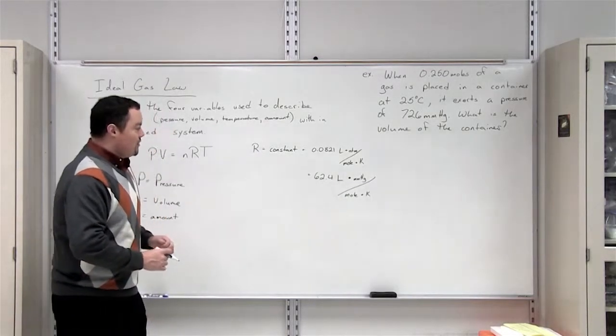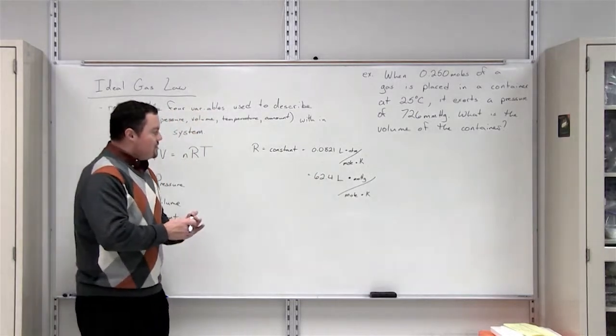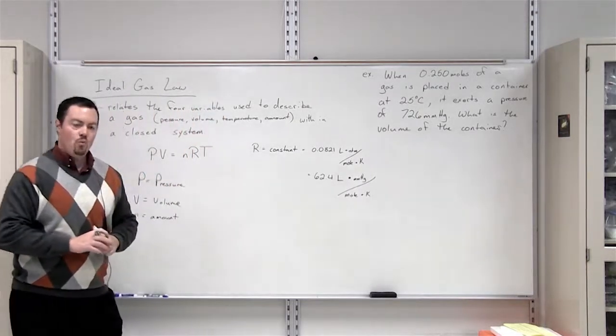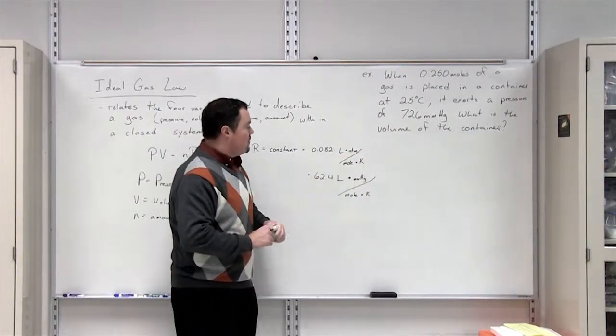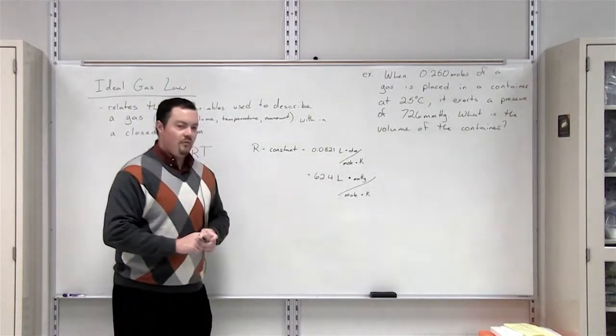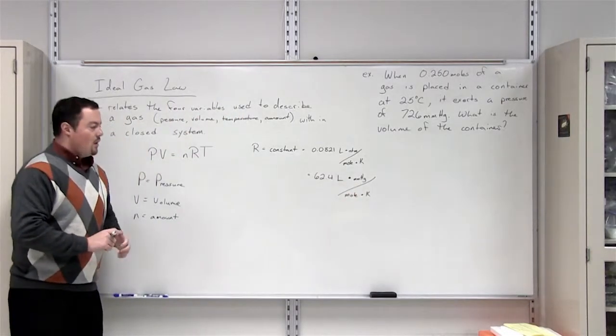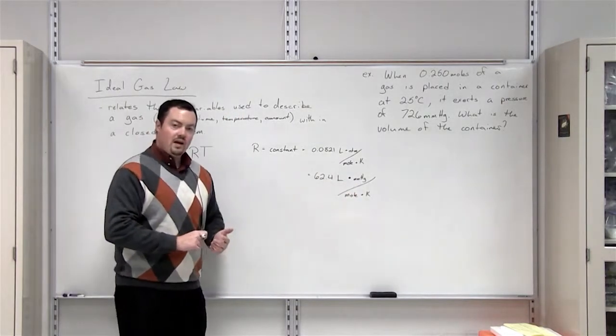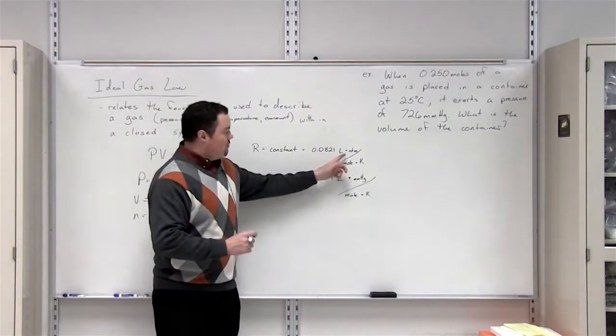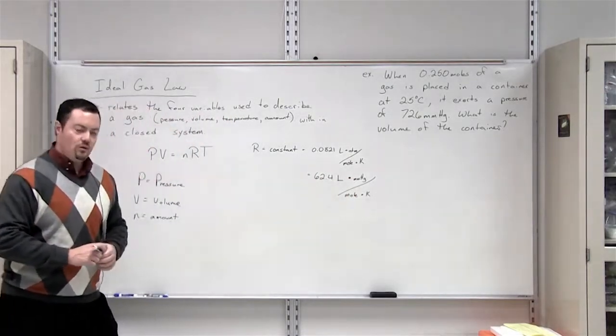The R value can have two different numbers. Let's look at these numbers. First of all, we've got 0.0821 liters times atmospheres over moles per Kelvin. Or we have 62.4 liters times millimeters of mercury over moles per Kelvin. We have to choose the correct ideal gas constant depending on the pressure value that we're given in the problem. We'll go over that a little bit in just a second.